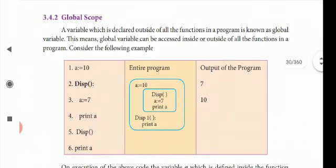A variable which is declared outside of all the functions in your program is known as global scope. Local scope is defined within the function, but the global scope is defined outside of the function. We declare the variable as a global variable. This means a global variable can be accessed inside or outside of all the functions in your program.